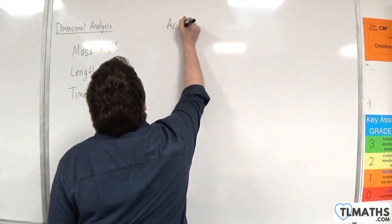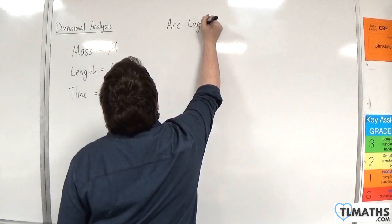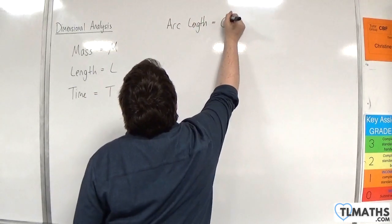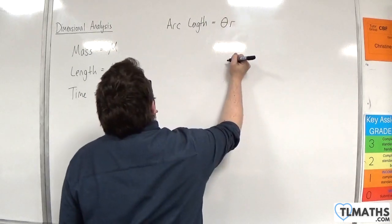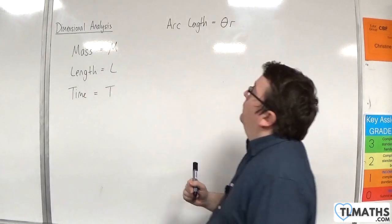The arc length formula in radians is theta times r. That's the length of the arc of a sector.